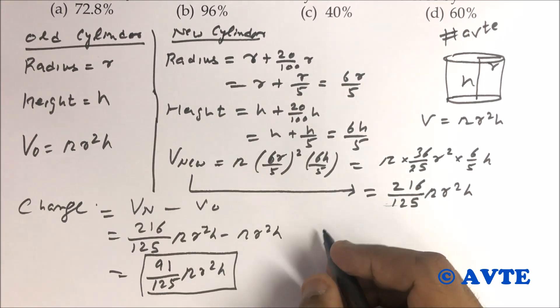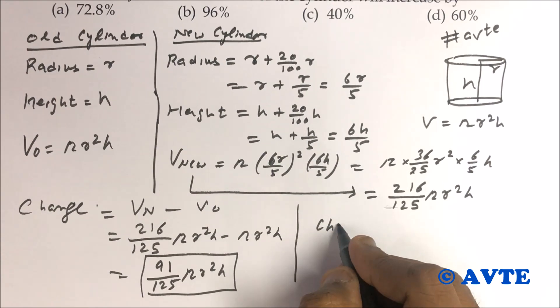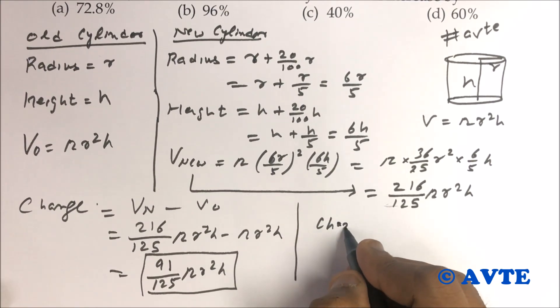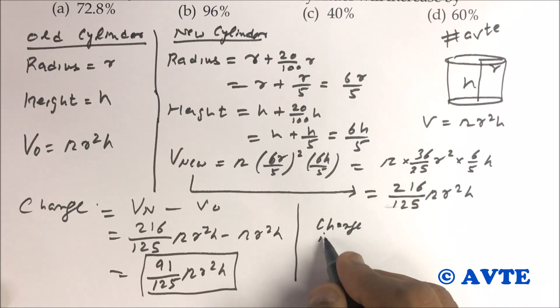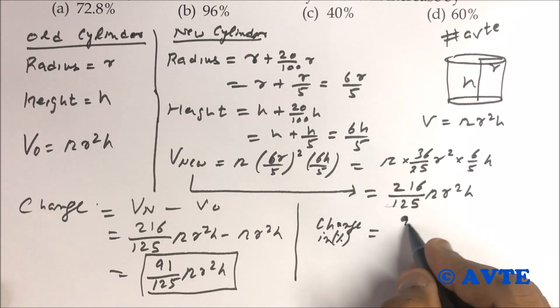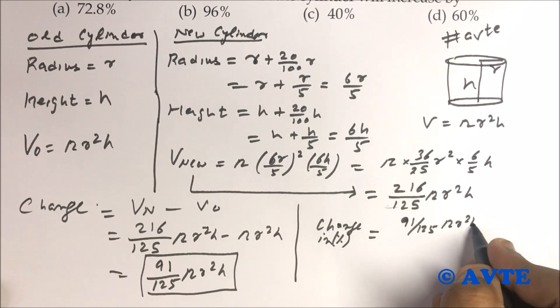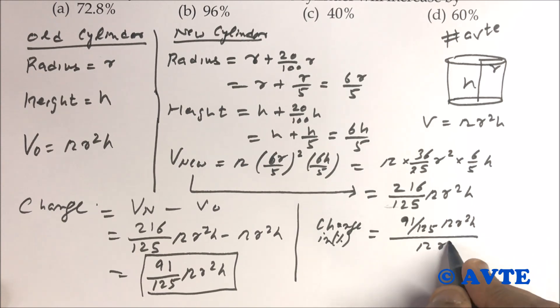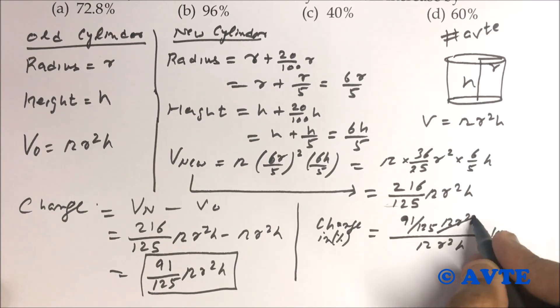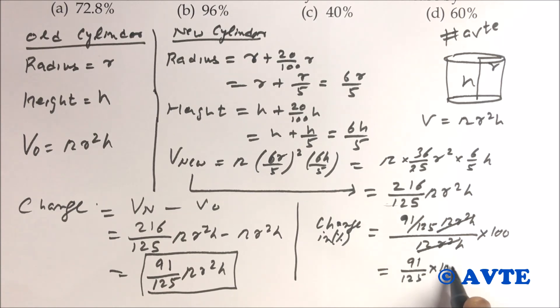With respect to their volumes, now we have to find the change in percentage. The formula is change upon original into 100.